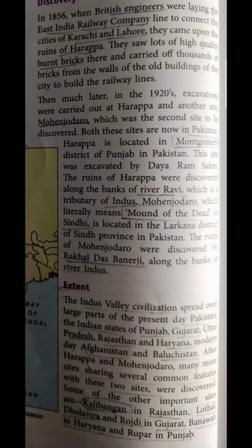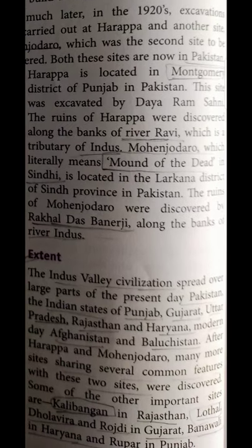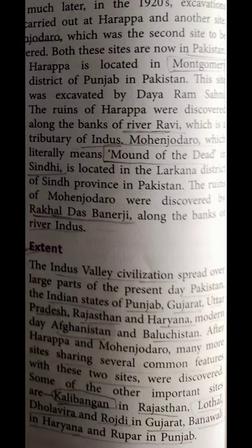The Indus Valley Civilization spread over a large part of present-day Pakistan. It also covered many Indian states: Punjab, Gujarat, Uttar Pradesh, Rajasthan, Haryana, modern-day Afghanistan, and Baluchistan.